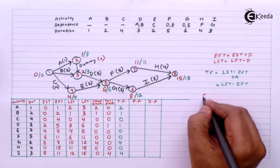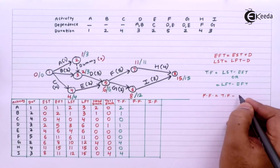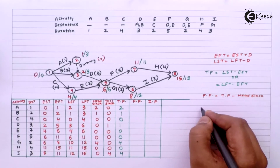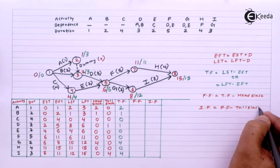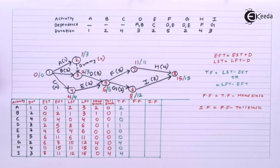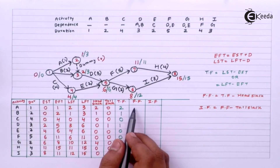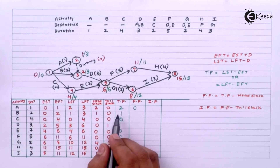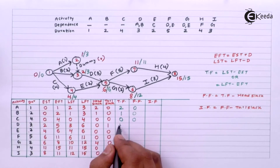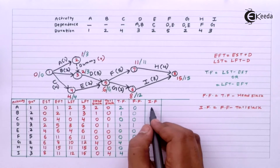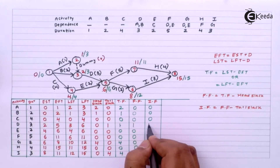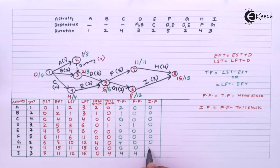Free float will be Total Float minus Head Slack. That gives: 2-2, 1-1, 0-0, 1-0, 0-0, 0-0, 0-0, 4-4, 0-0. Independent float will be Free Float minus Tail Slack, giving: 0-0, 0-0, 0-0, 0-0, 0-0, and 0.